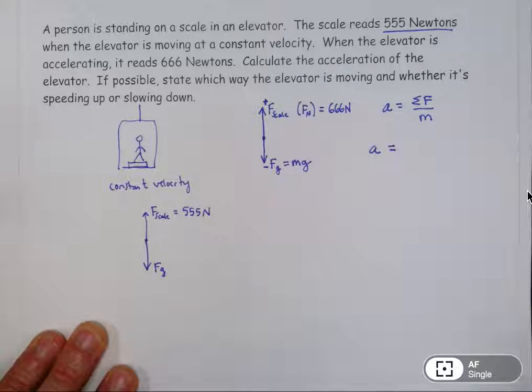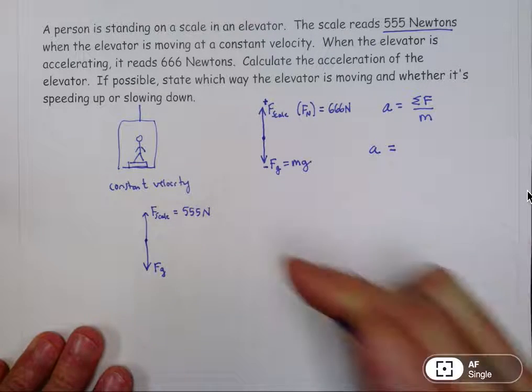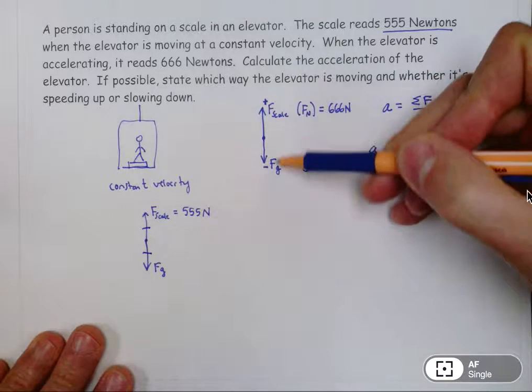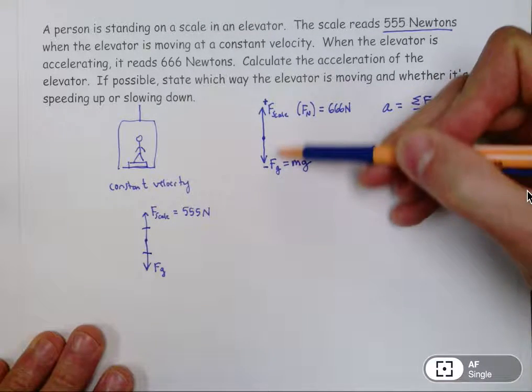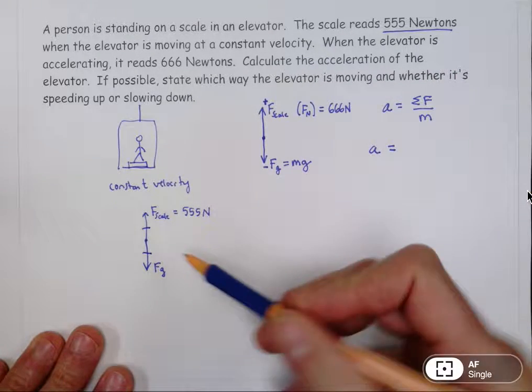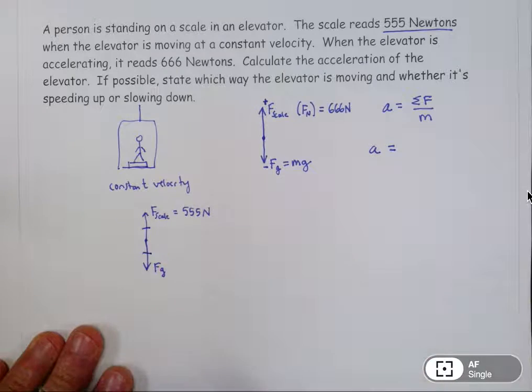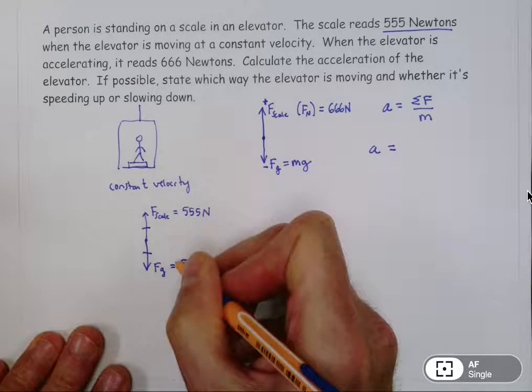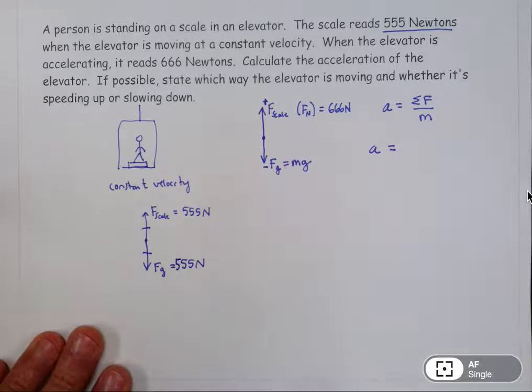Well, here's where you have to remember something we've learned about Newton's laws, that if something's moving at a constant velocity, the forces on it are balanced. So the forces are not balanced when there's acceleration. These two are not equal to each other because there's acceleration in this situation. But in the situation where there is a constant velocity, they are balanced, they are equal to each other. And so that means that the force of gravity is equal to 555.